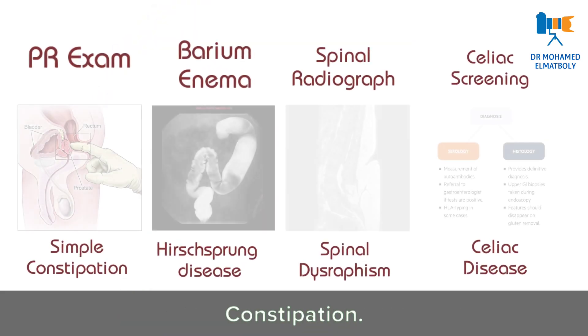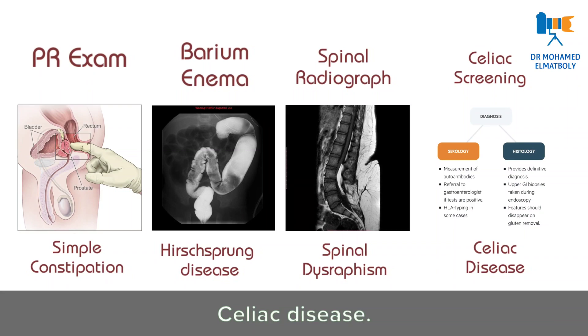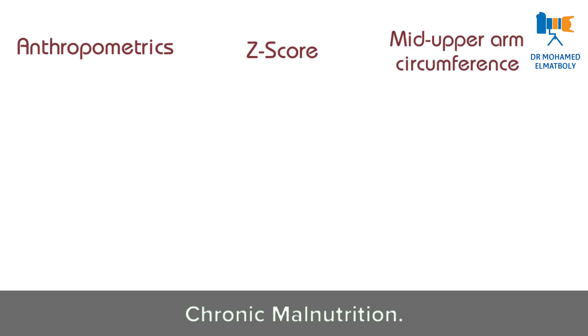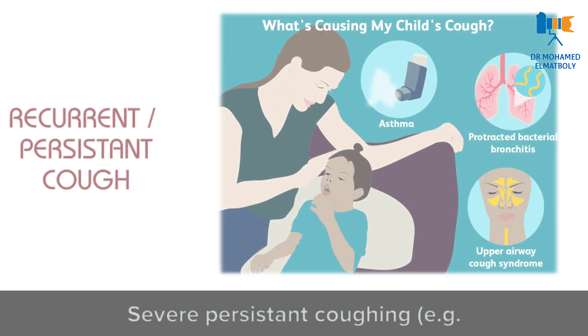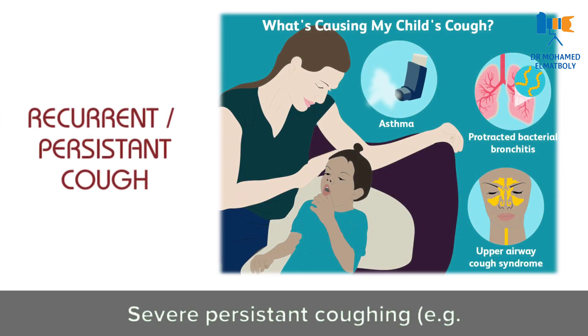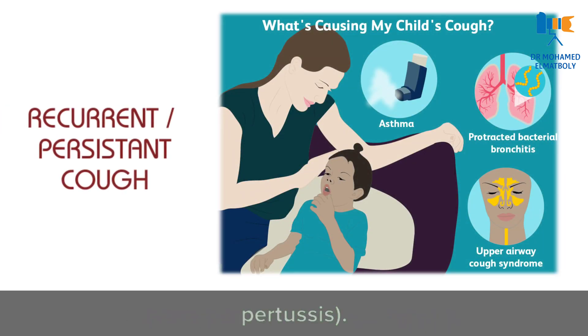Let's start briefly and enumerate them one by one. Constipation. Celiac disease. Chronic malnutrition. Severe persistent coughing — for example, pertussis.